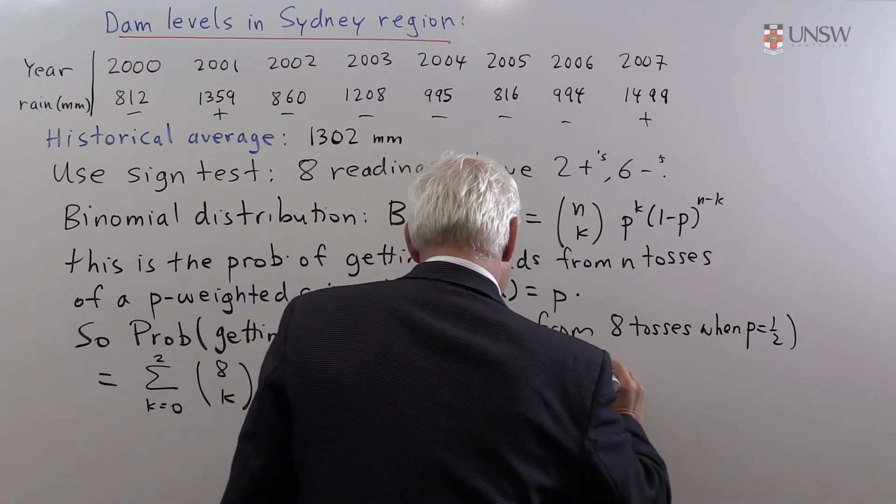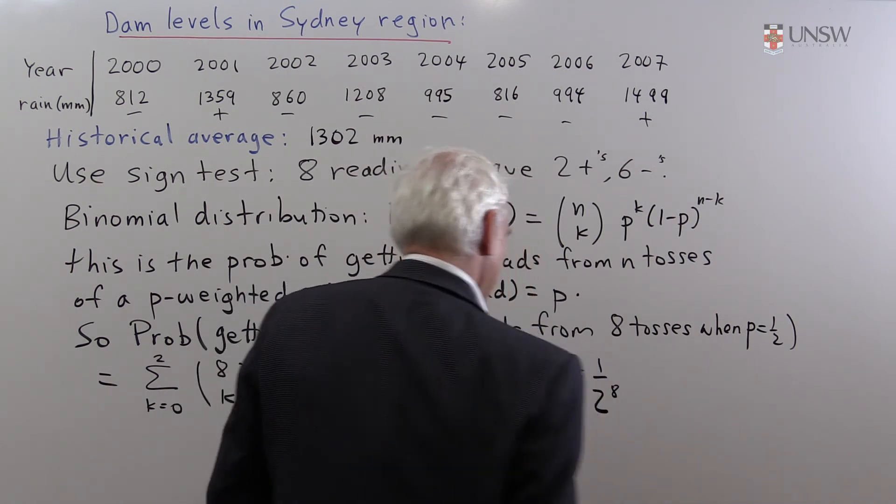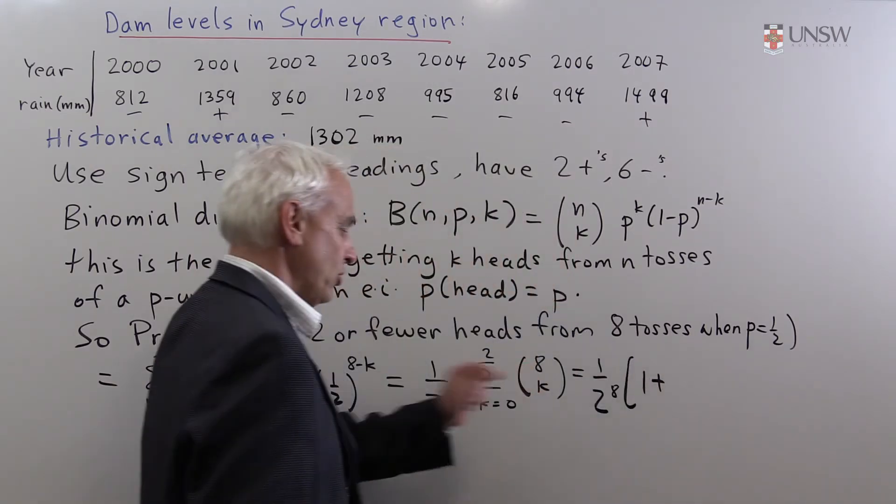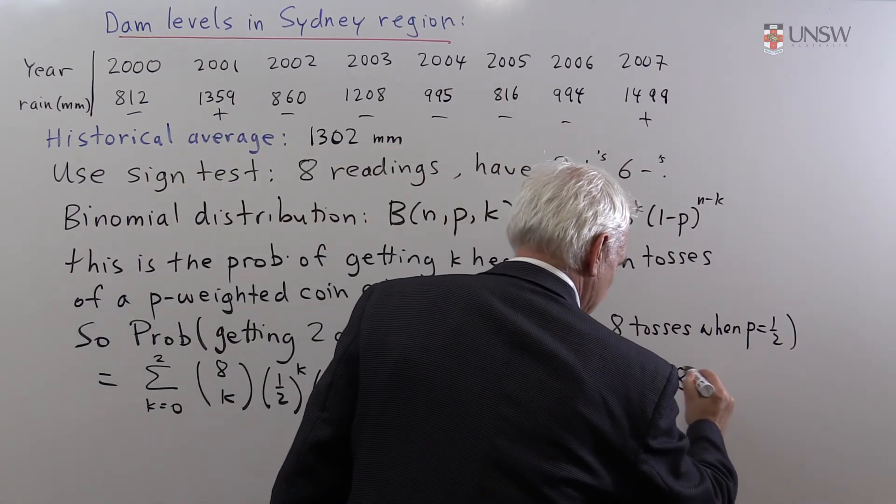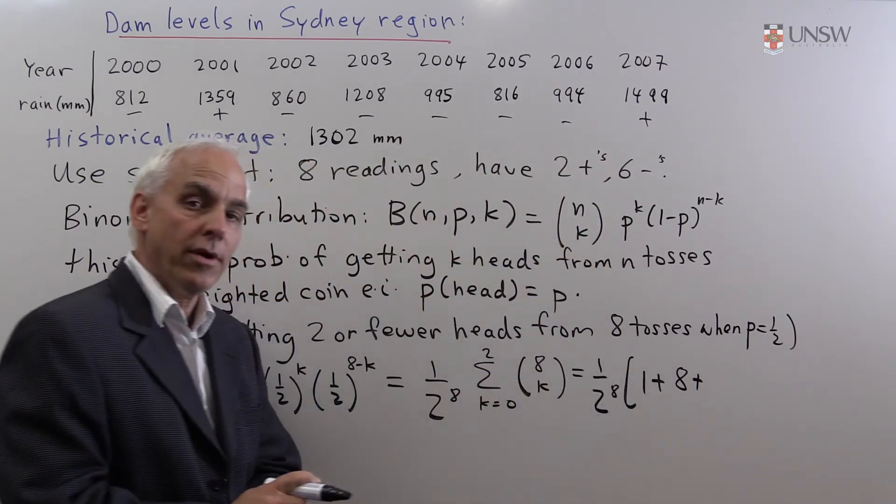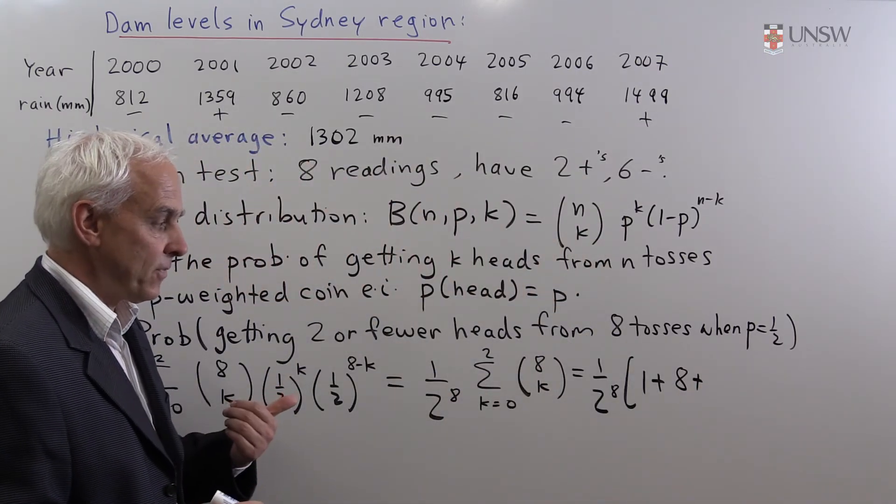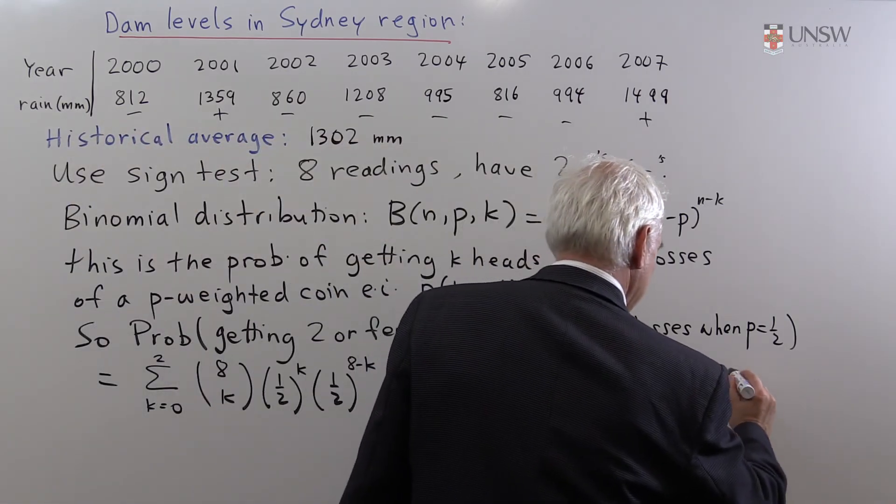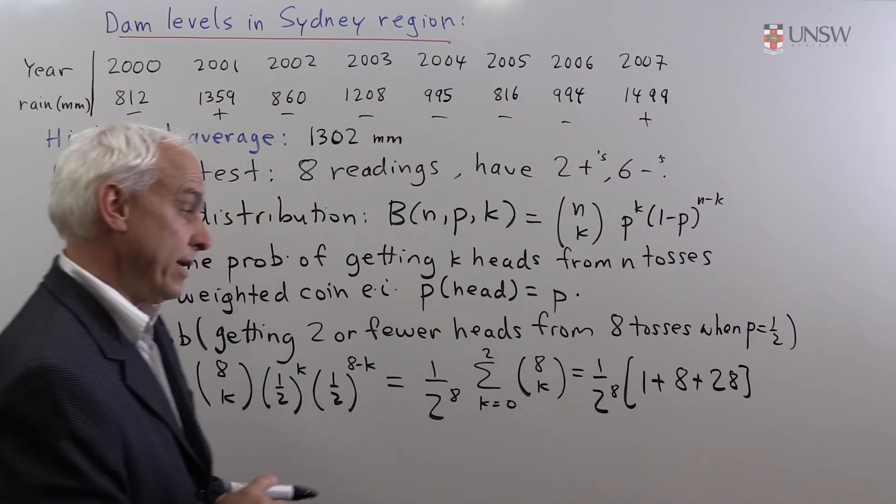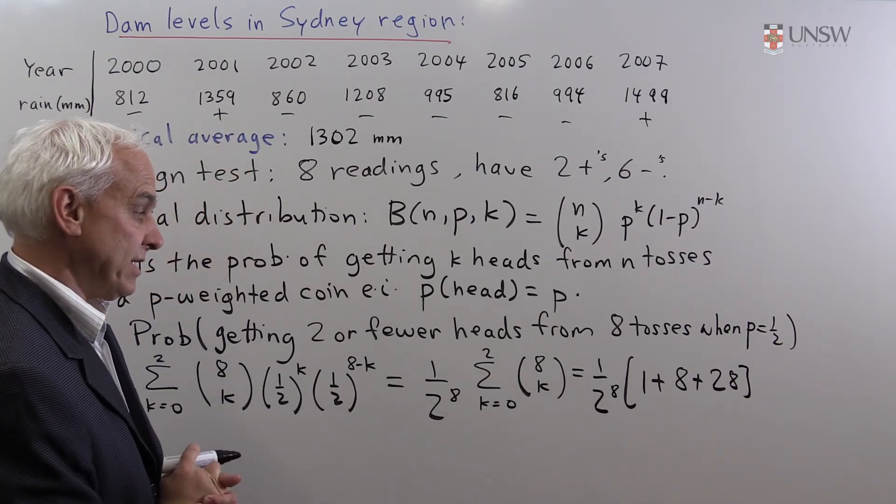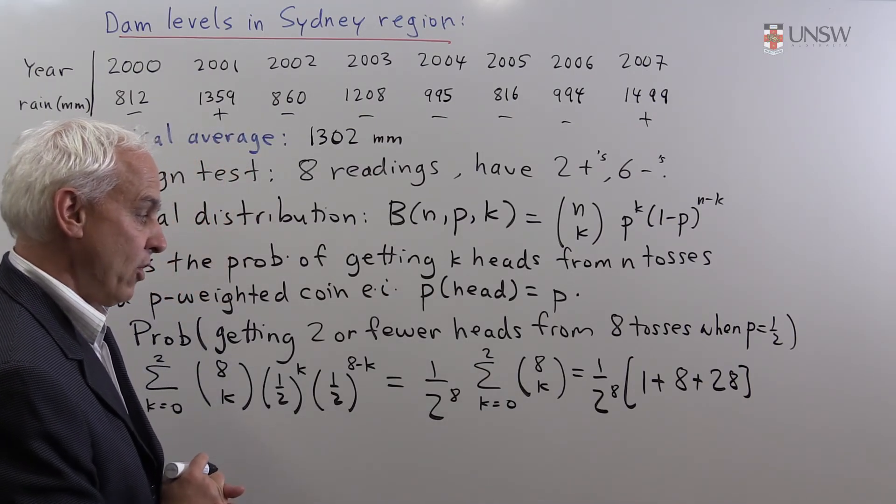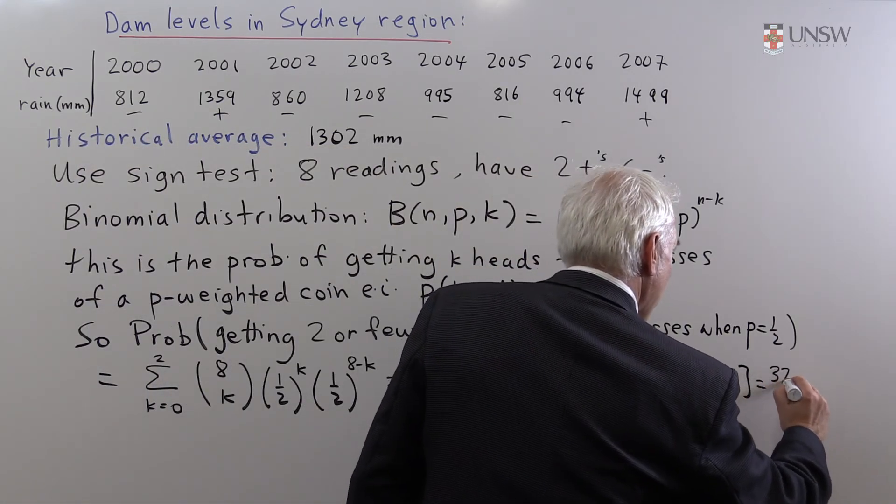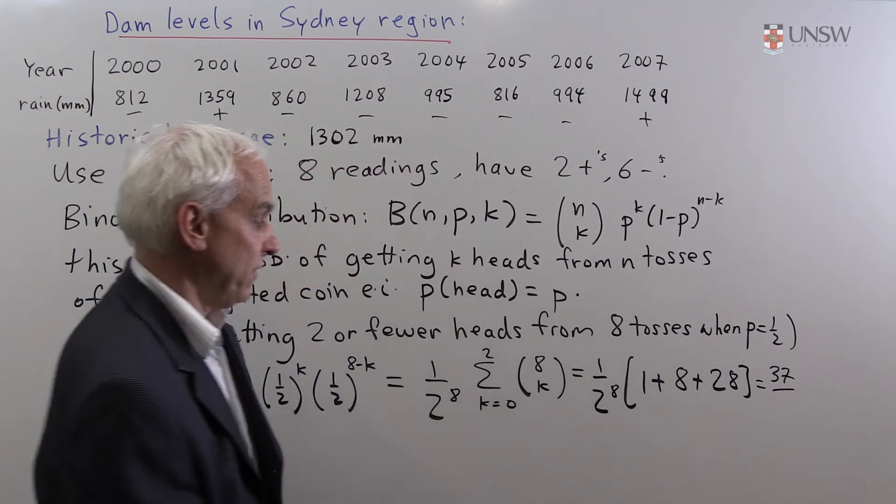So what is that? Well, eight choose zero is one. Eight choose one is eight. And eight choose two is eight times seven all over two. That's 28. So altogether we get nine plus 28 is 37. So that's 37 over two to the eight. And two to the eight is 256.